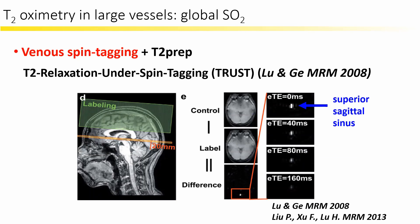Besides spatial separation, the venous spin tagging technique using label and control scans is applied as the TRUST sequence. Similar to ASL, the difference imaging between label scans that invert upstream venous blood and control scans without inversion can effectively remove the tissue signal. A relatively low acquisition resolution can increase SNR and obtain good T2 measurement for venous blood in the superior sagittal sinus for global oxygen consumption.